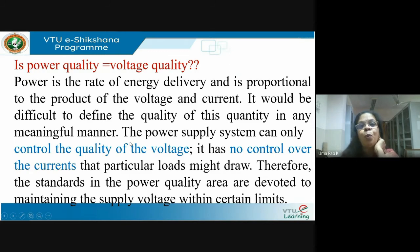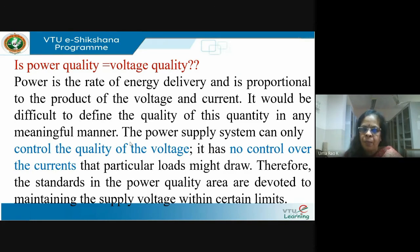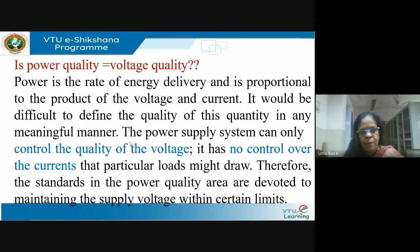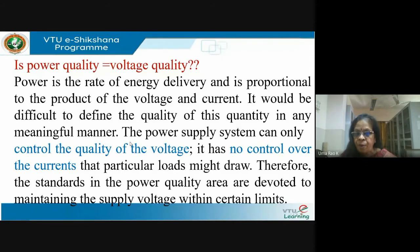It would be difficult to define quality in terms of power. The utility can only control the voltage — it cannot control the current. The voltage is determined by the utility; the current is determined purely by the load. Connect an incandescent bulb and it draws one type of current; connect a computer and it's different; connect an LED bulb and it's different again. One industry does welding, another has induction furnaces, another has VFDs — the current drawn is completely different in each case.